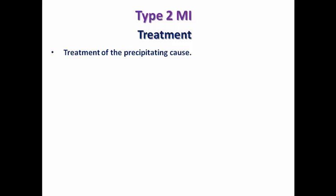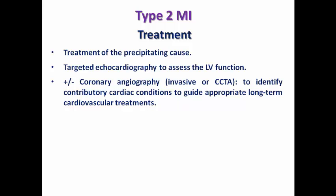Treatment for type 2 MI, similar to MINOCA, focuses on treating the precipitating cause. Targeted echocardiography assesses LV function. Coronary angiography — invasive or CT — may or may not be needed depending on whether a frank cause of supply-demand mismatch like severe hypotension or severe anemia has been identified. Unlike MINOCA, coronary angiography is not mandatory in all type 2 MI cases. There is no specific recommended pharmacological treatment due to lack of robust scientific evidence and the wide range of precipitating causes.